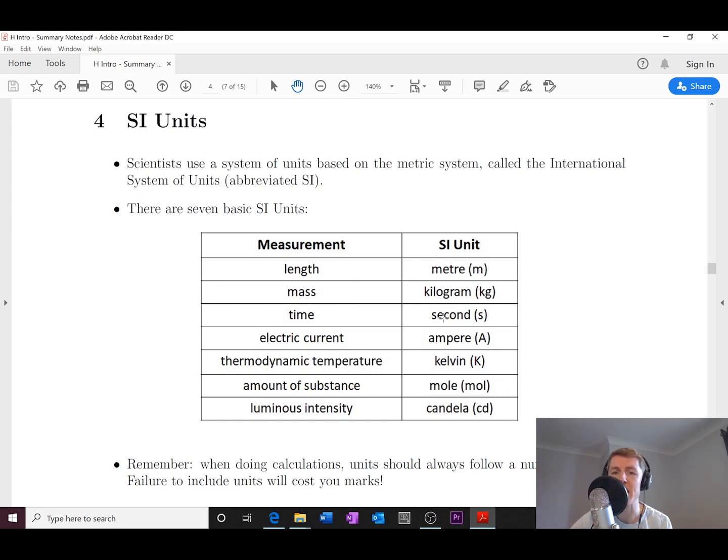We also saw that in National Five electricity, the current was measured in amperes or amps for short, and temperature was measured in kelvins. We did also get degree Celsius temperatures, though.